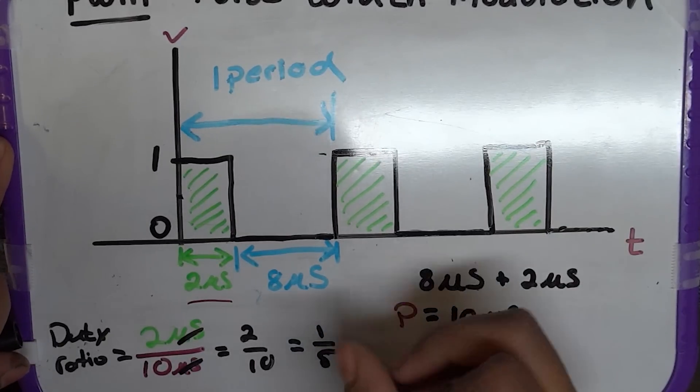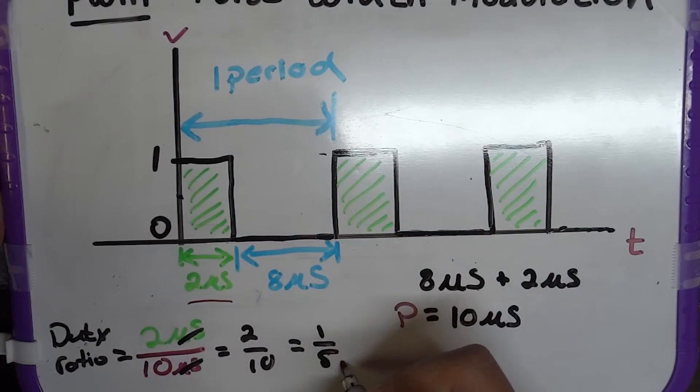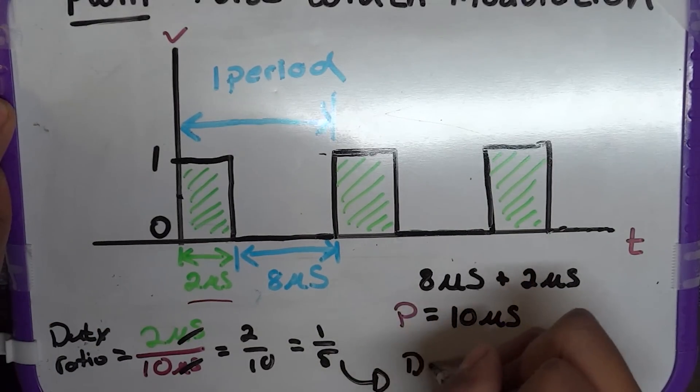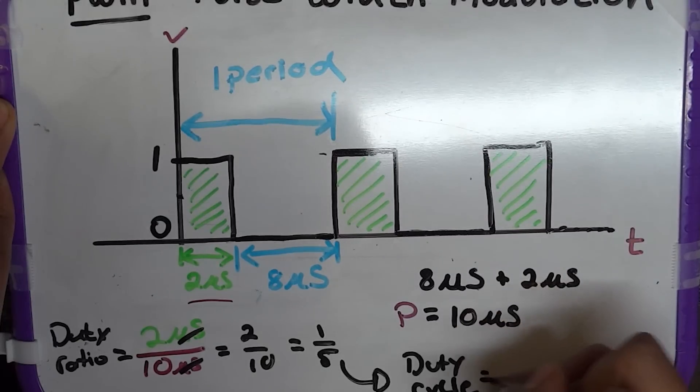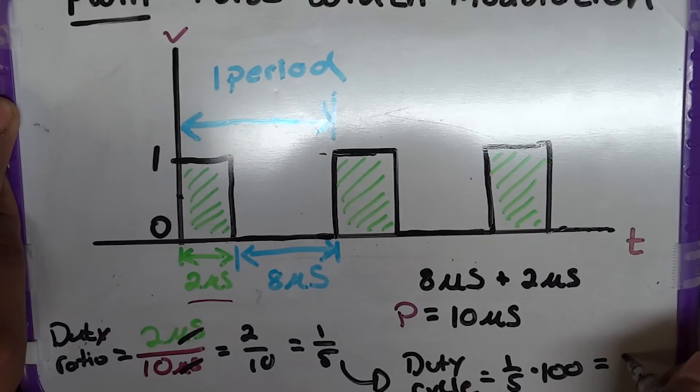Now, we'll make it into a percentage quite easily by multiplying by 100. This comes into a duty cycle, which is 1 fifth times 100 is equal to 20.